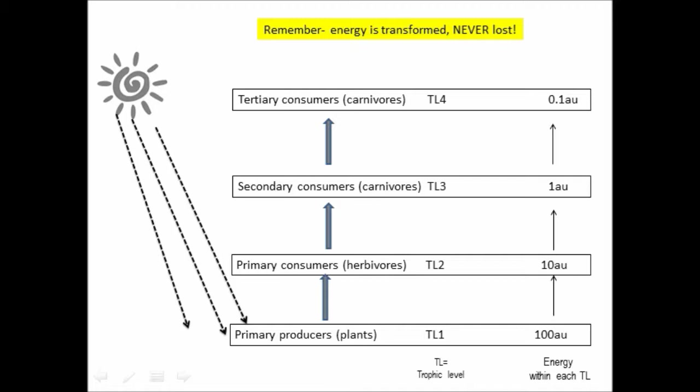Secondary consumers are carnivores. These are animals which eat the primary consumers, the herbivores, TL3 and TL4. And TL4 is pretty much as high as you'll get in most terrestrial ecosystems. If you look over on the right-hand side of the diagram here, the numbers just represent baseline figures for the amount of energy available from each trophic level.